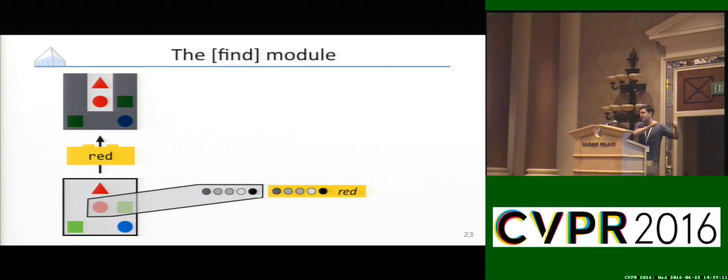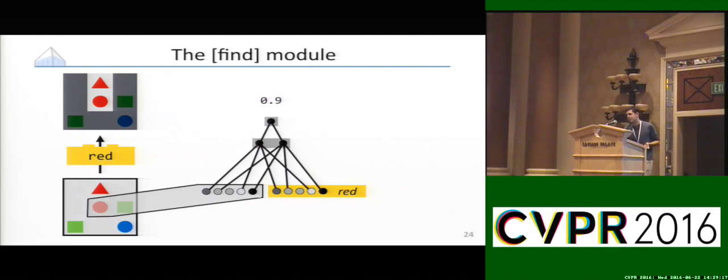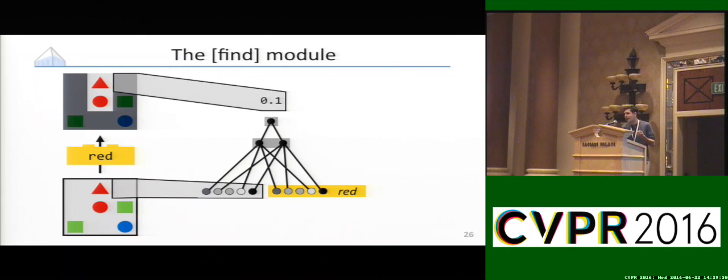We have our feature vector on one side, our parameter vector on the other side. We concatenate them together and pass it through a multilayer perceptron with a single output unit, where this output unit corresponds to the strength of the attention in the region we're looking at. Then we sweep this operation over all of the different positions in the image. In general, we want this scalar score that we get out to be large in regions that have red things and small in regions that don't have anything in them or that have things that are not red.